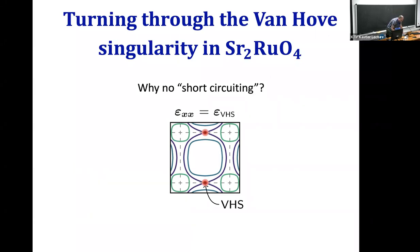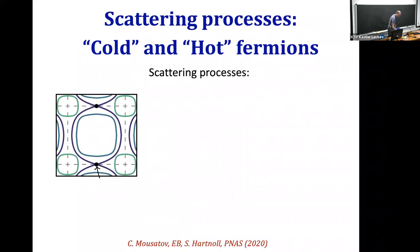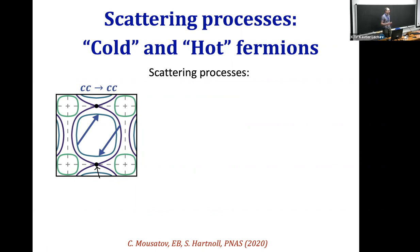To answer why there's no short-circuiting, you have to think about different scattering processes. Here's the system where one band is tuned to the Van Hove singularity. It's useful to classify the different scattering processes into groups: we distinguish cold electrons, which live far away from the Van Hove singularity, and hot electrons, which live in its vicinity. We can then consider cold-cold to cold-cold scattering, cold-cold to cold-hot scattering, and cold-hot to cold-hot scattering.